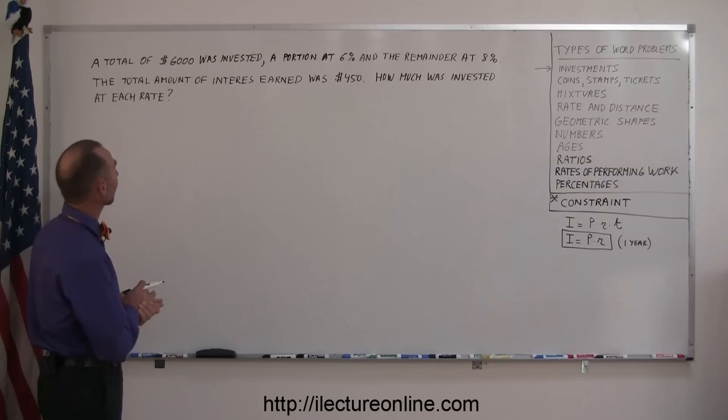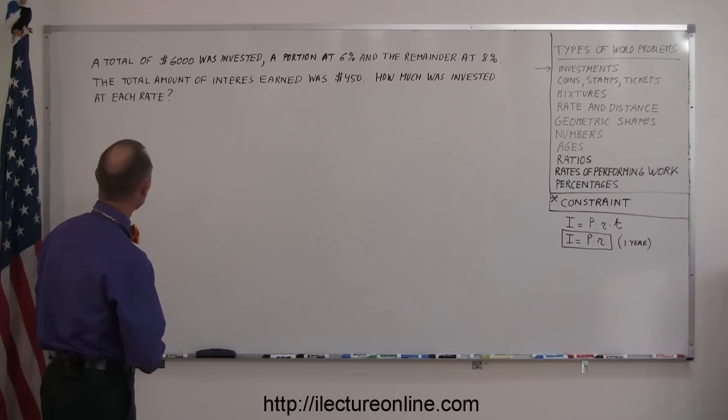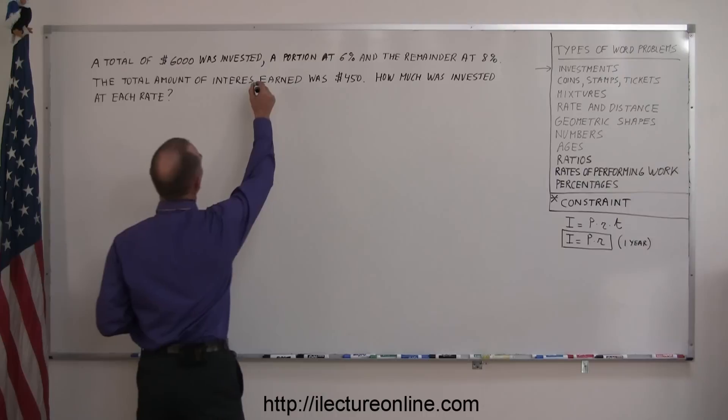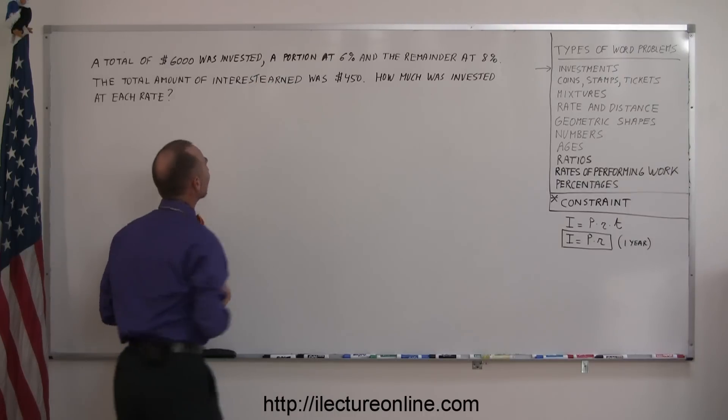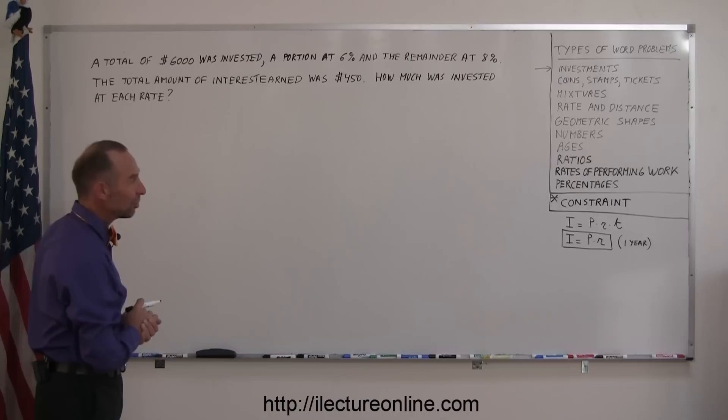A total of $6,000 was invested, a portion at 6%, and the remainder at 8%. The total amount of interest earned—oh, I'm missing a T right here, so let me put that in there—interest earned was $450. How much was invested at each rate?